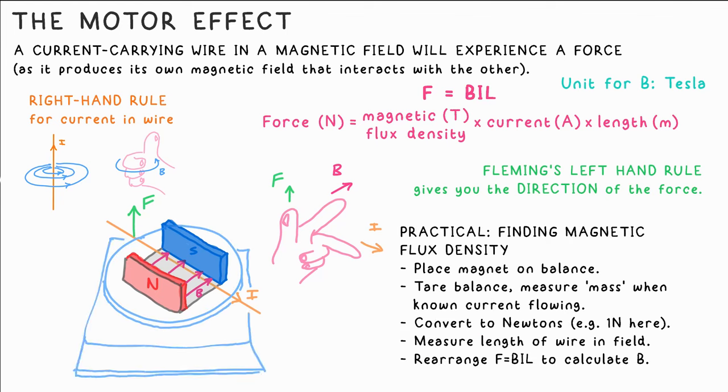To measure the size of the force in reality we can put the magnet on a balance. Due to Newton's third law the magnet will also be pushed down with the same force. Calculate the force from the fake mass measured, use an ammeter to get the current and a ruler to measure the length of the wire and you can calculate the magnetic flux density.